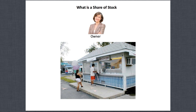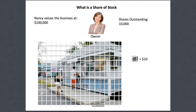In the previous lessons, Nancy was trying to sell her business for two hundred thousand dollars. Now she's having a hard time and wants to sell it for a hundred thousand dollars. She's really having a lot of problems doing that, so maybe she's going to break the company down into shares.